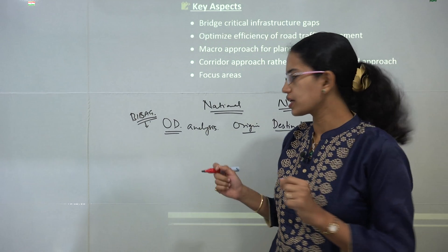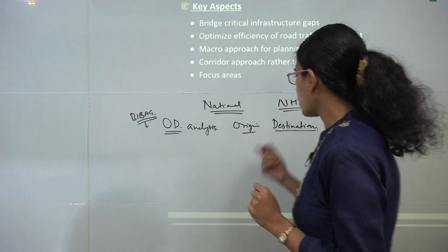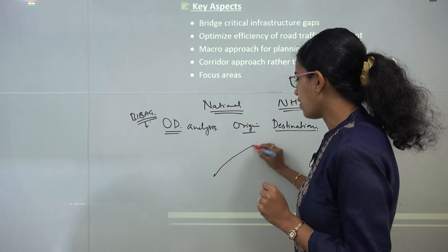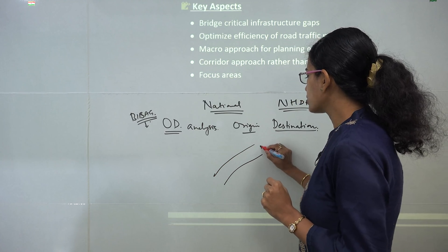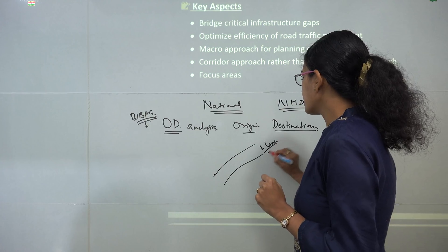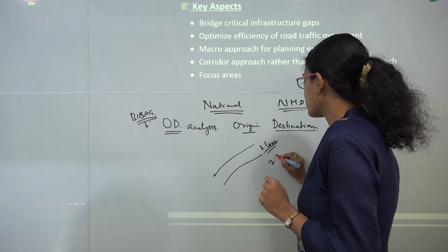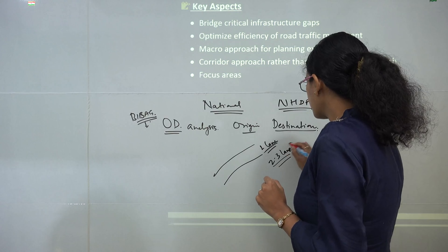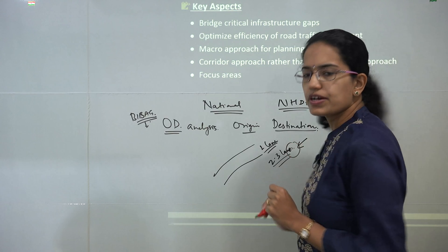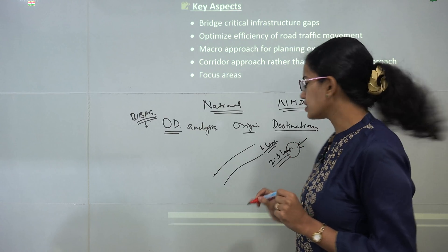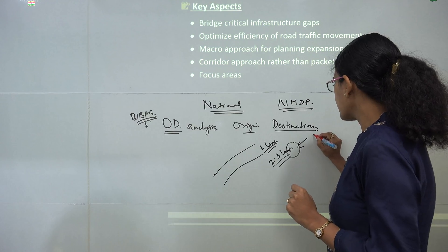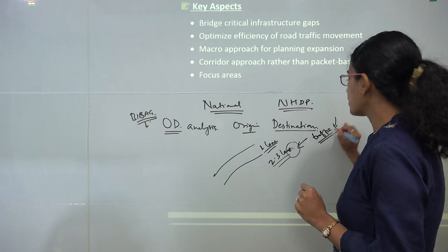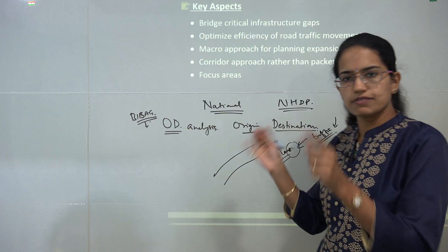In many regions you have national highways running but those are single lane, however there is a requirement of two to three lanes. What we are trying to do is identify those areas and work around a real-time traffic analysis, and based on that traffic assessment we would be working around the development in those areas.